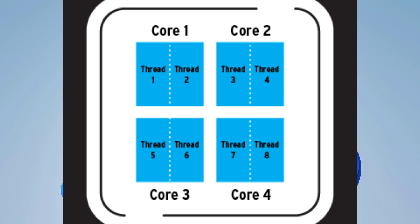A thread is like a virtual component, typically created by the operating system, that helps the CPU handle multiple tasks more efficiently. In simple terms, a thread is a component of a process. One of the most commonly used analogies is to think of the core as a person's mouth and the thread as the hands — the mouth does all the eating while the hands help organize the workload. Think of a thread as the management system for feeding tasks to the core.